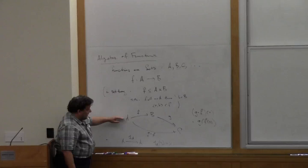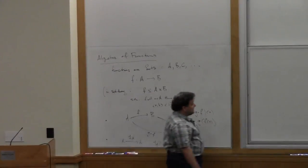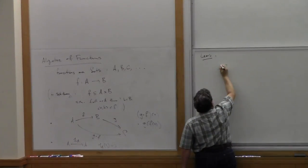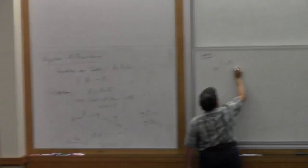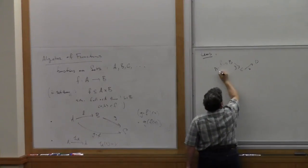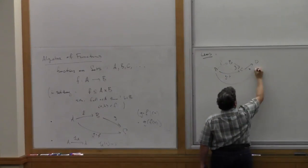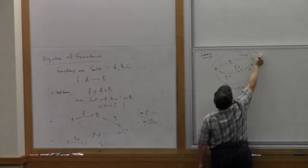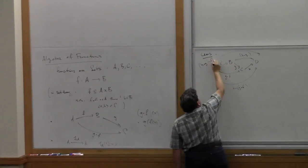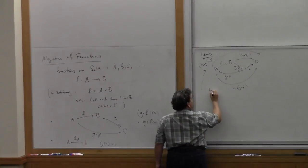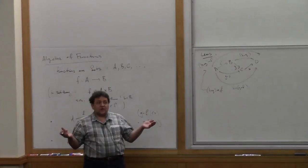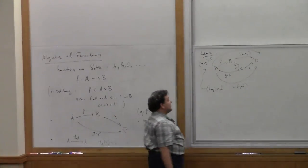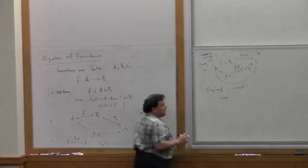So that's the basic data: a composition operation and an identity function operation. Then we have laws. The associativity law says that for functions F, G, H in sequence, H after (G after F) equals (H after G) after F, because both reduce to H(G(F(x))) for every x. These things are equal — that's the associative law for composition.